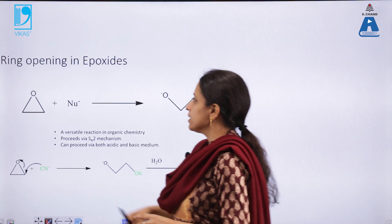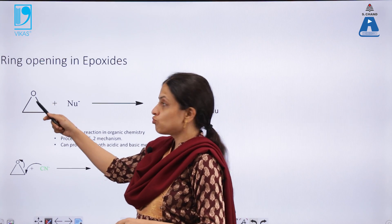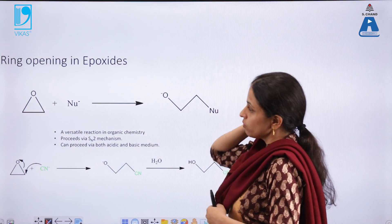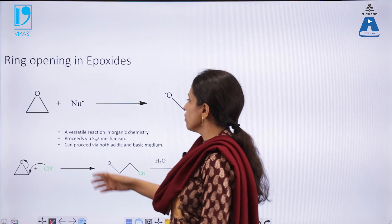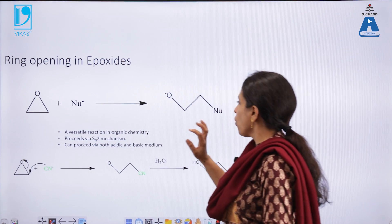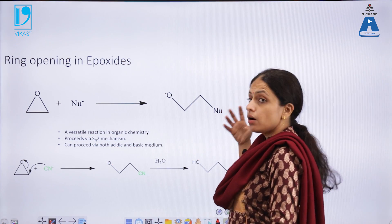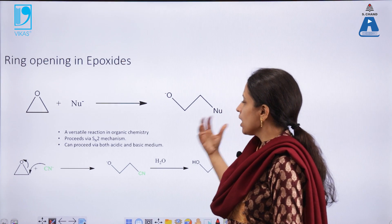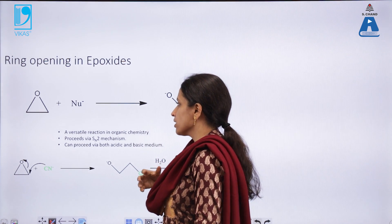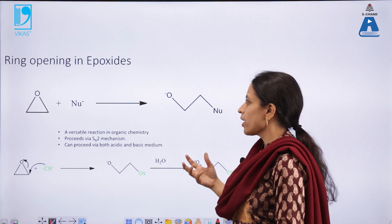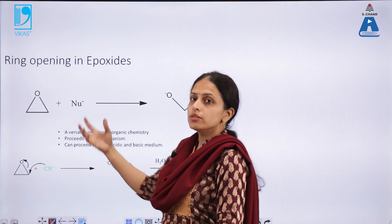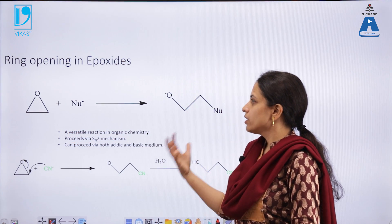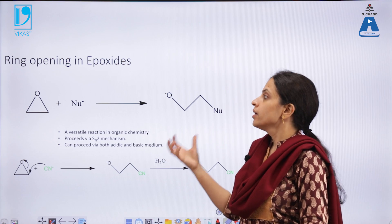Epoxides are cyclic ethers of very small size, usually because these are the more stable ones. Under the presence of nucleophiles, the epoxide ring can easily open up to give a variety of other functional molecules. These are versatile reactions in organic chemistry which proceed via an SN2 mechanism. Why SN2? Because the substrate is a small, unhindered one. If it were a hindered substrate, ring opening would be difficult.